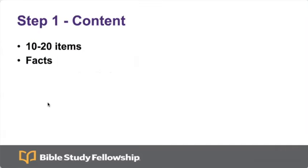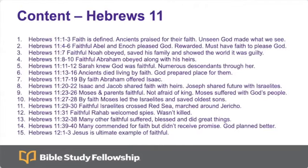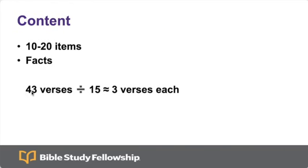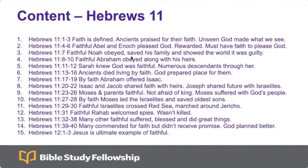Step one, the content list is going to be 10 to 20 items, and it is just the facts. I did Hebrews 11 and a little bit of 12, and I had 43 verses to work with. So I took 43 and divided by 15, because I want between 10 and 20 items — that's about three verses for each content list item. I have three verses, three verses, and down here I do verses 32 to 38, a few more verses, but that's okay. In the end, 15 content list items, which is great.